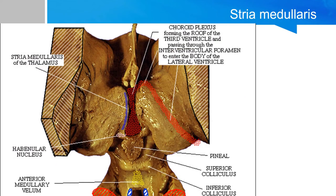This is another representation of the stria medullaris, which forms the horizontal ridge on the medial surface of the thalamus and ends in the habenular nucleus.